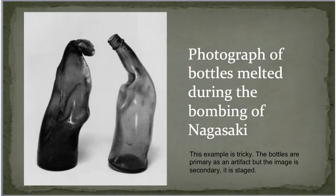For example, a photograph of melted bottles from the bombing of Nagasaki — those are primary sources, hands down, because they melted. But a staged photo of those bottles placed on a background isn't quite correct. Someone had to arrange these and take the picture to make that. So is it primary or not? They have to understand it's staged — it really happened, but it didn't really happen in this nice, pretty little picture. It's good to trick them because they do this kind of thing all the time. Makes them think.